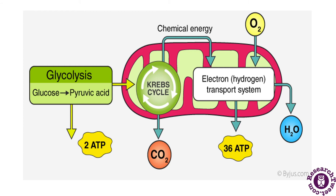Now we will discuss aerobic respiration through a diagrammatic representation. This diagram represents the entire process of aerobic respiration. There are different cycles: glycolysis, the Krebs cycle, and the electron transport chain, all clearly shown in the diagram. In glycolysis, glucose is converted into pyruvic acid, releasing two molecules of ATP. After glycolysis, the process enters the Krebs cycle, which releases chemical energy. The electron transport system requires oxygen and releases H2O plus 36 molecules of ATP.